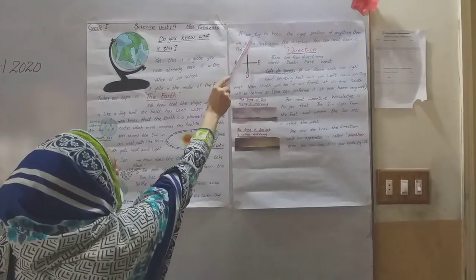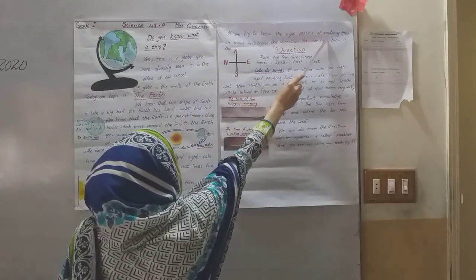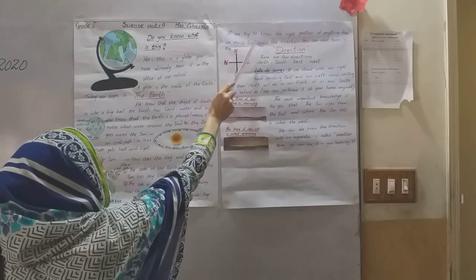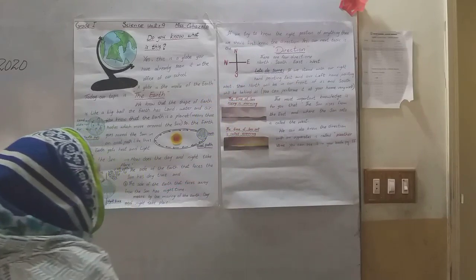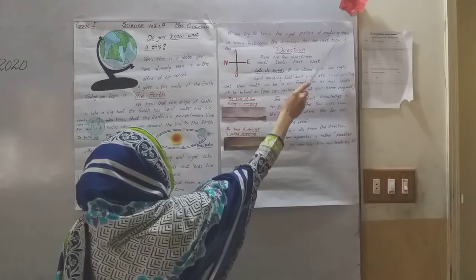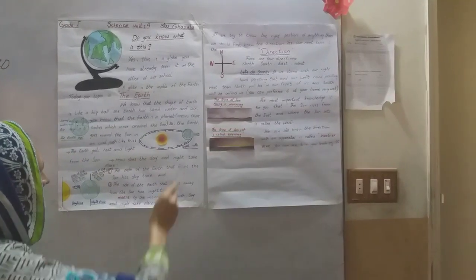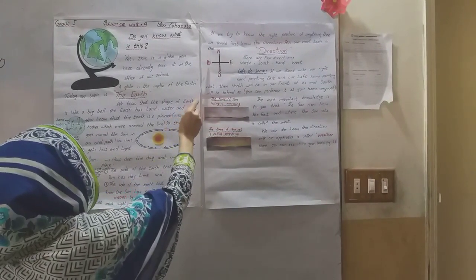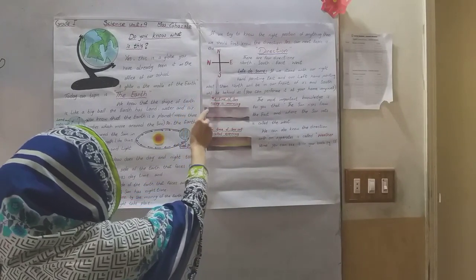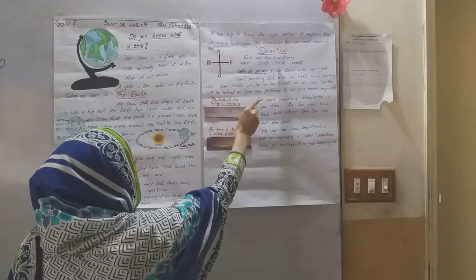If we try to know the right position of anything, then we should first know the direction. Yes, our next topic is the direction. Here is the compass. East, north, west and south. There are four directions: north, south, east and west.